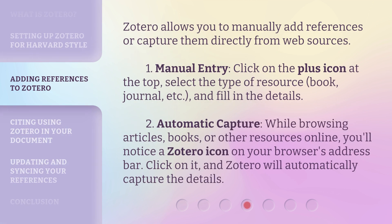Zotero allows you to manually add references or capture them directly from web sources. Step 1: Manual entry — click on the plus icon at the top, select the type of resource (book, journal, etc.), and fill in the details. Step 2: Automatic capture — while browsing articles, books, or other resources online, you'll notice a Zotero icon on your browser's address bar. Click on it, and Zotero will automatically capture the details.